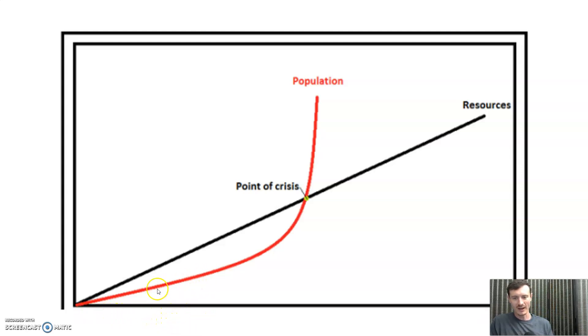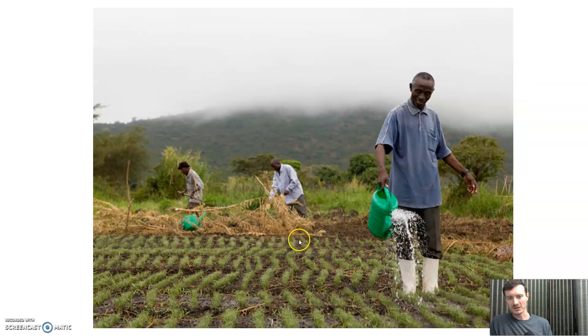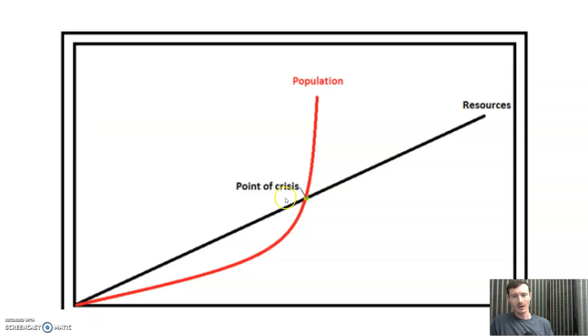So population in red is increasing exponentially, just like the bacteria, whereas resources, especially food production, does not go up exponentially over time, is increasing in a linear way. And what his argument essentially was is that there would be this point of crisis where there were far more people than there were resources, and as a result there would be this great famine, and death, and die off, and catastrophic destruction of human beings. That was his claim.